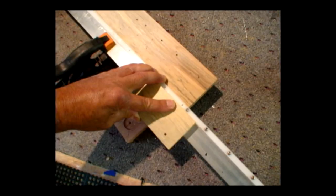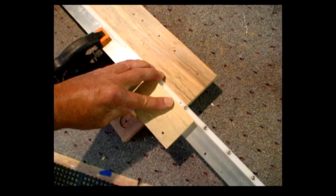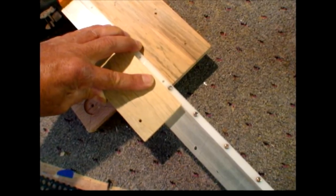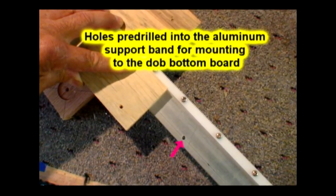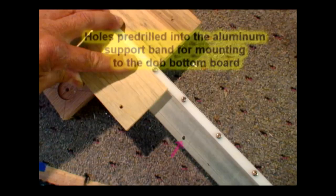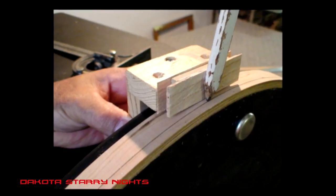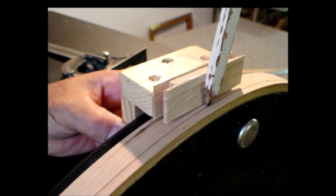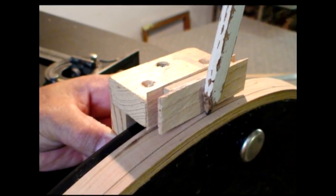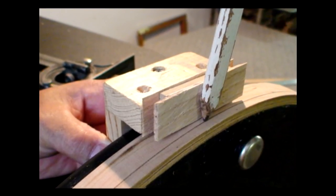The track is then clamped, drilled, and fastened to the aluminum band. The wood spacer on the bottom board of the Dobsonian mount is marked in a similar fashion, utilizing a wood block spacer. This mark will serve as a guide for the proper installation of the aluminum band supporting the azimuth gear track.